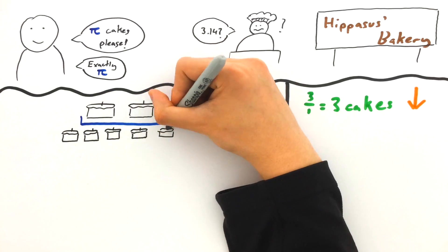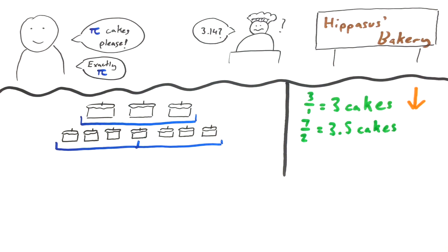He could take out seven cakes, cut them into two groups, and then give me one of those groups, but that would be too many.